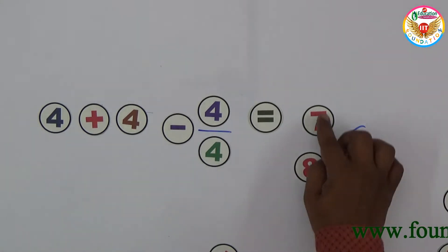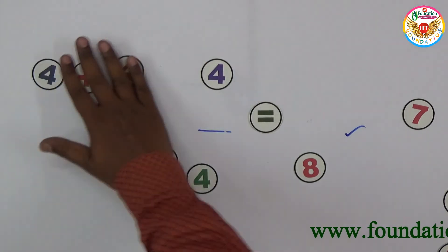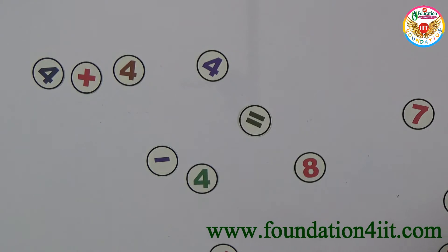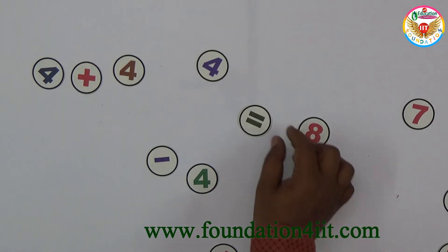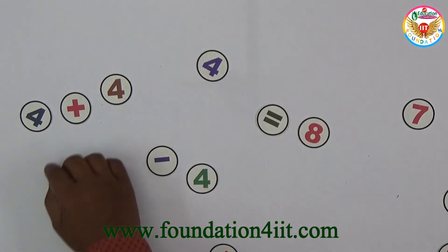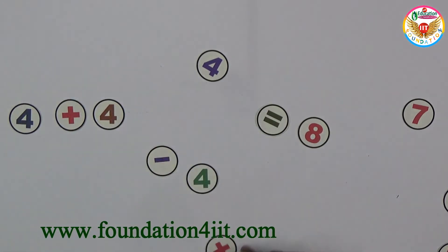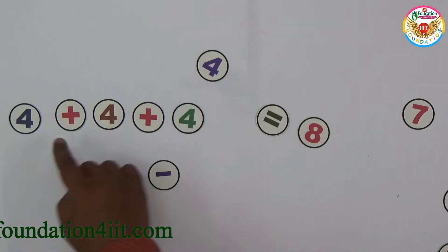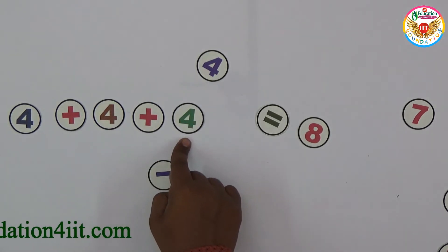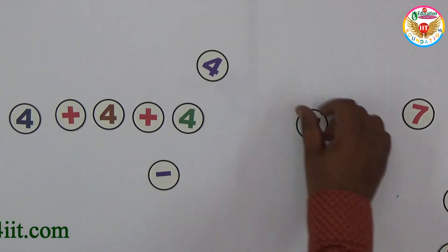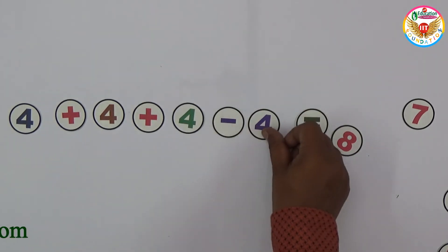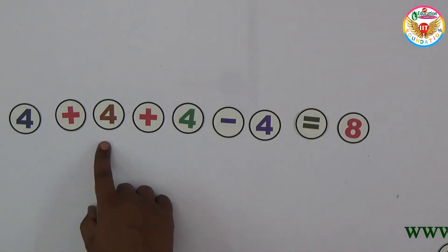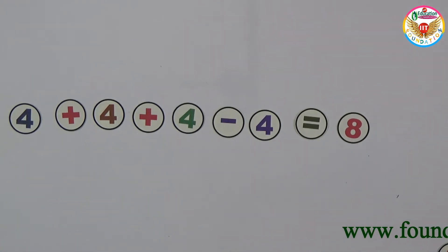To get 8: from 12 we subtract 4. So 4 plus 4 plus 4 is 12, and 12 minus 4 equals 8. One solution is 4 + 4 + 4 − 4 = 8.